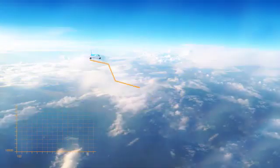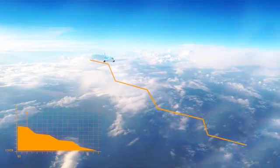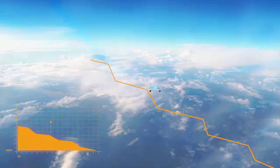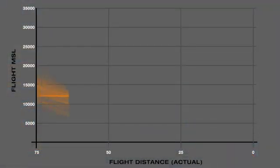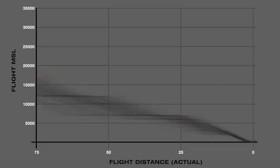A traditional descent is like walking down a flight of stairs. Based on air traffic controller instructions, the pilot descends and applies speed brakes, then levels off, then powers the engines up, then descends and applies speed brakes again. The cycle repeats itself until the plane is on final approach to an airport.